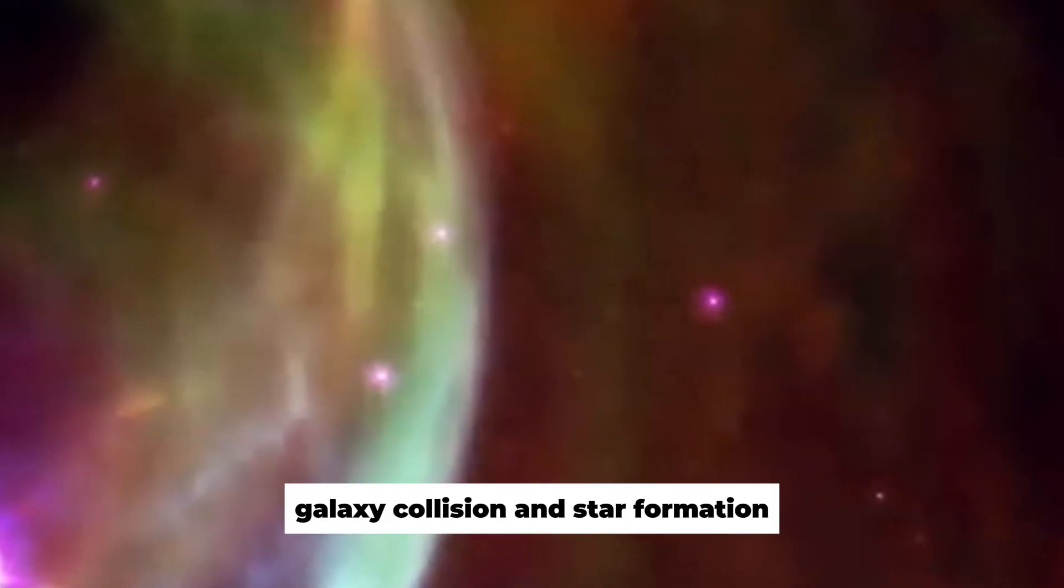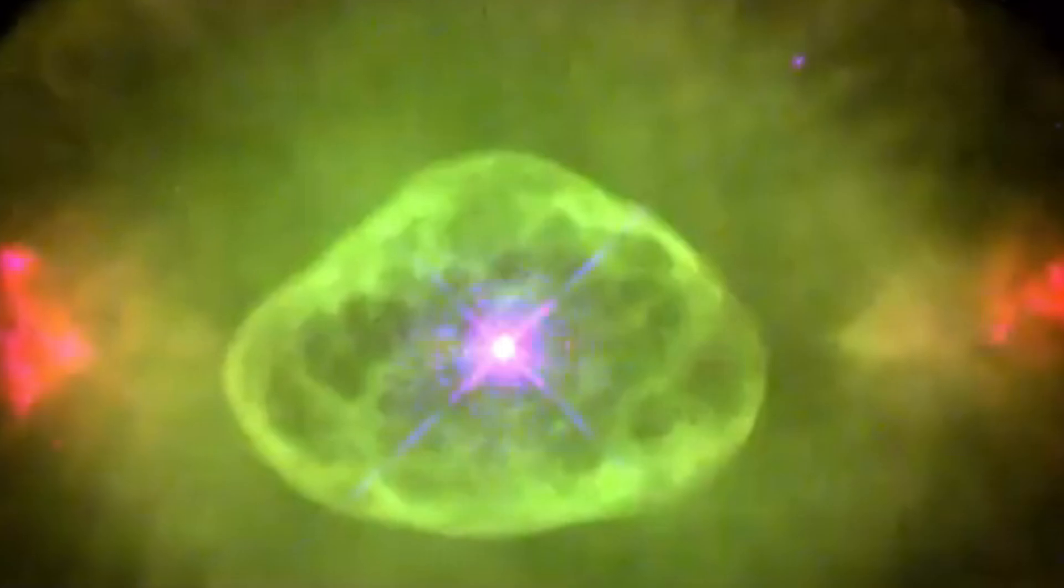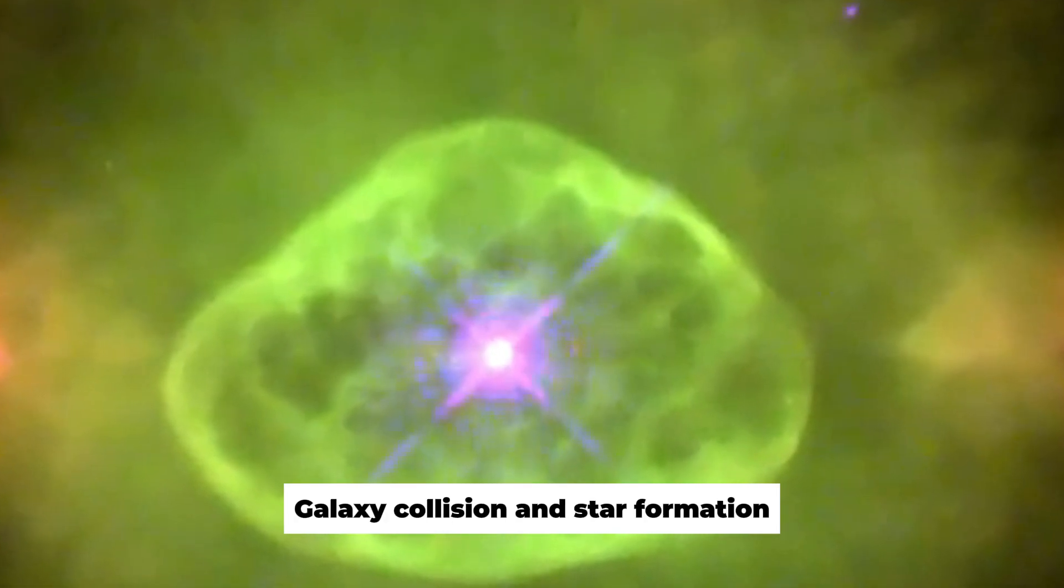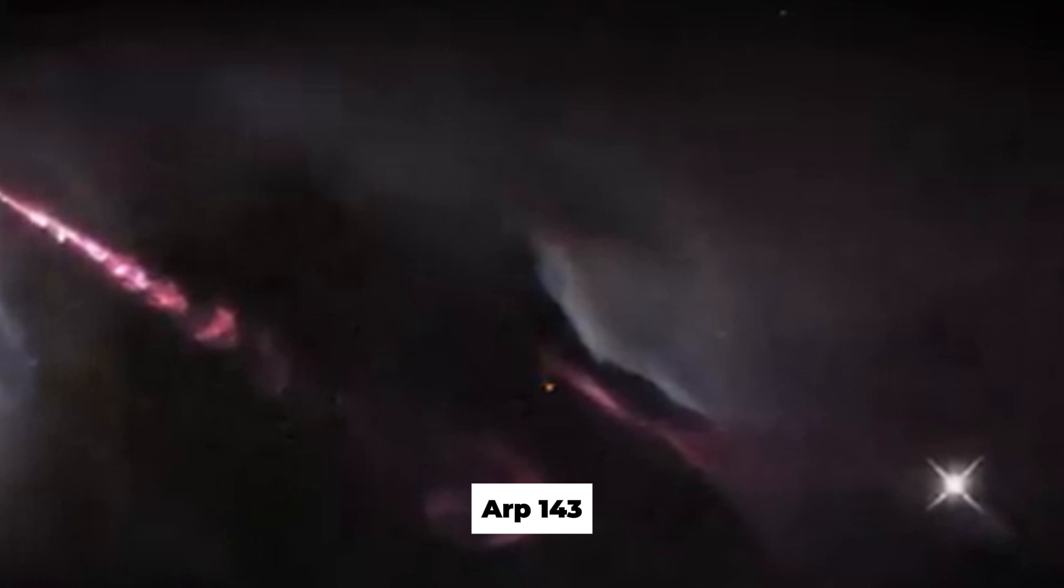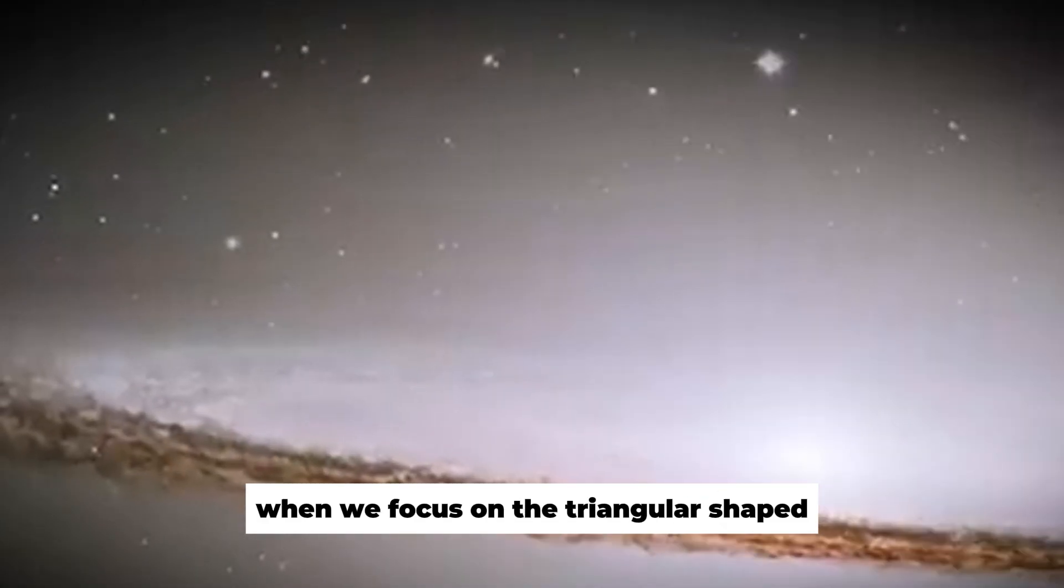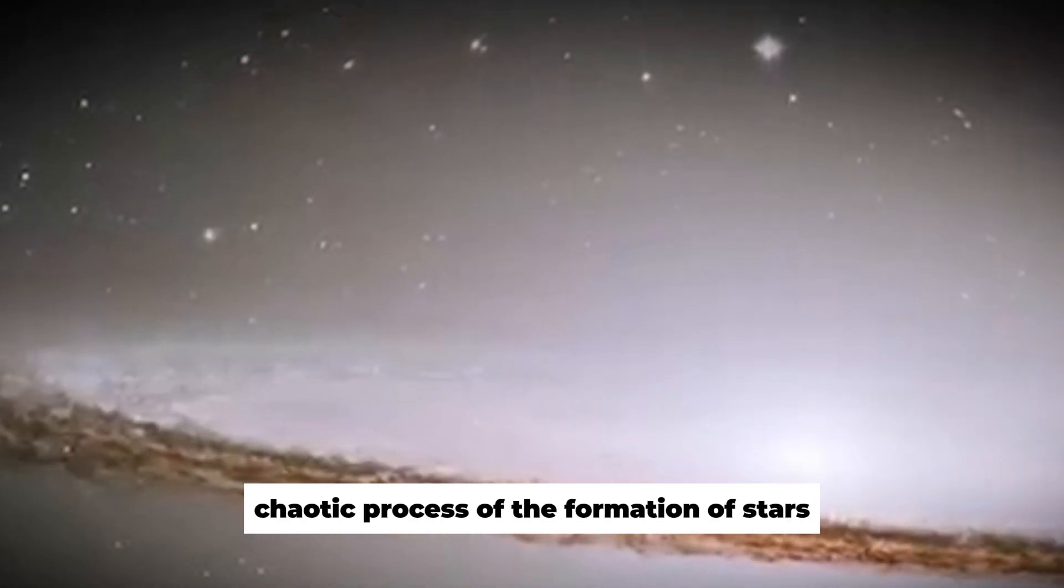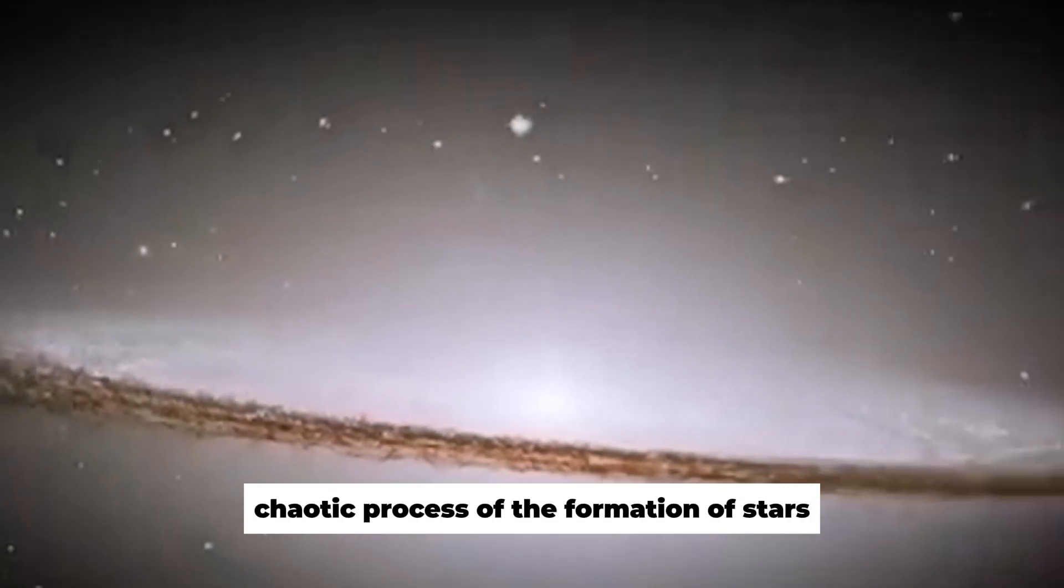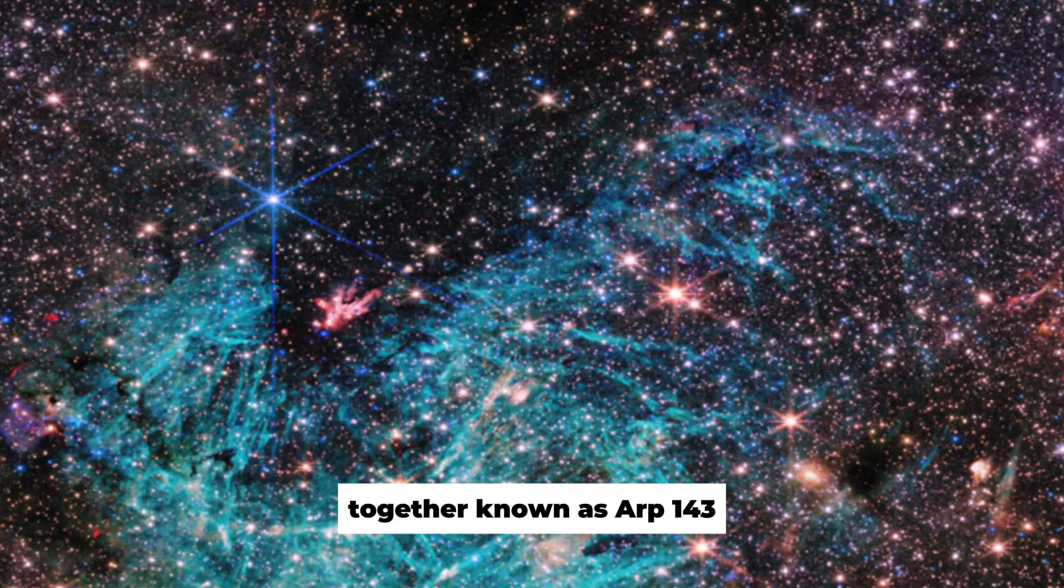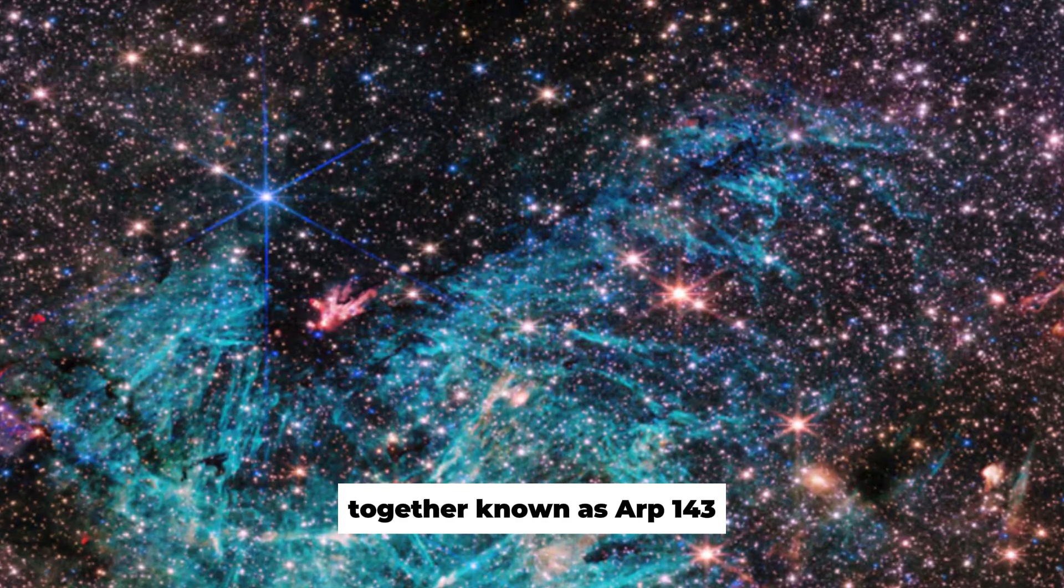Number 6: Galaxy Collision and Star Formation ARP 143. This visual sight of the collision of two galaxies becomes much more vivid when we focus on the triangular-shaped chaotic process of the formation of stars. The galaxies that are part of this collision are together known as ARP 143.